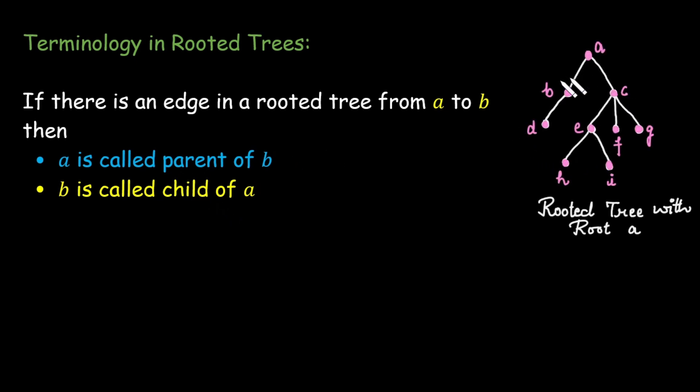For example consider this rooted tree at vertex a. In this case b and c are the children of a because they are directly connected to a and lie one level below it. So a is the parent of b and c.